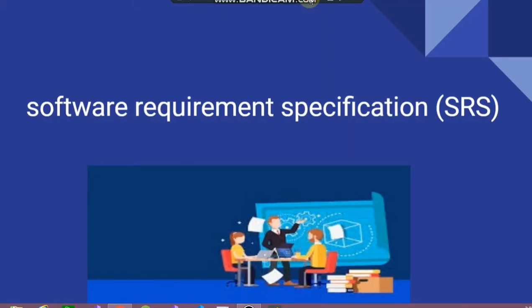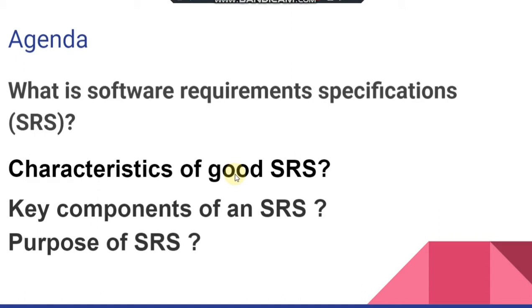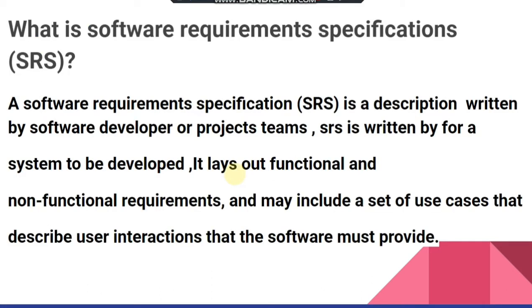Welcome to Digital Soft X continuing software engineering tutorials. Today's topic is Software Requirement Specification. Software requirement specification is an important topic in software engineering because it specifies the software and its functionality. Today's agenda includes: what is SRS, characteristics of a good SRS, key components of SRS, purpose of SRS, and an example or overview of SRS documentation.